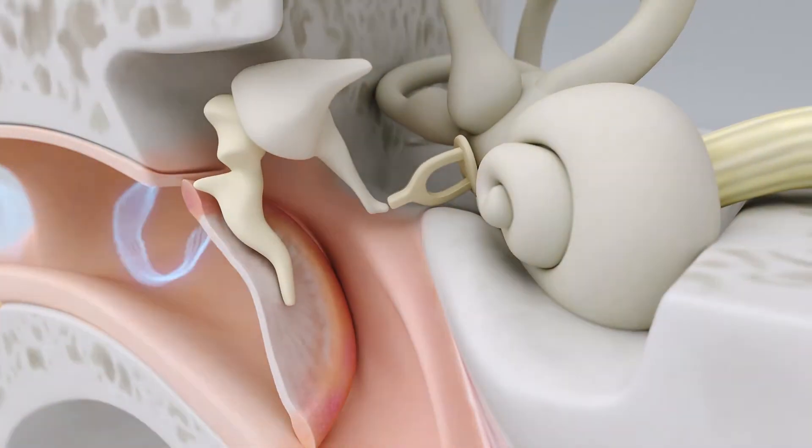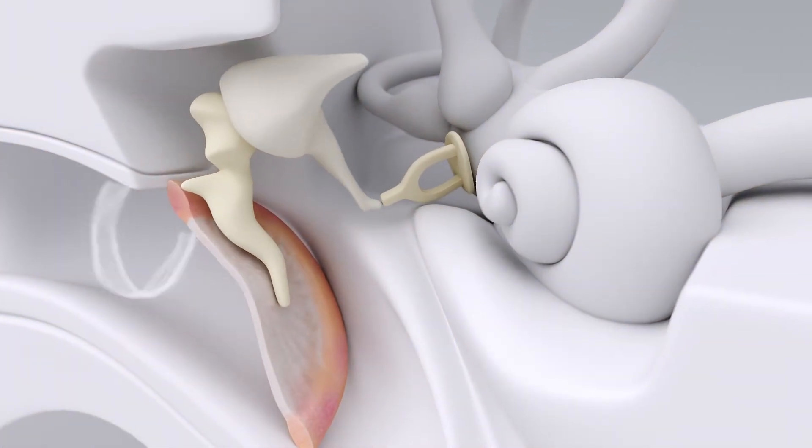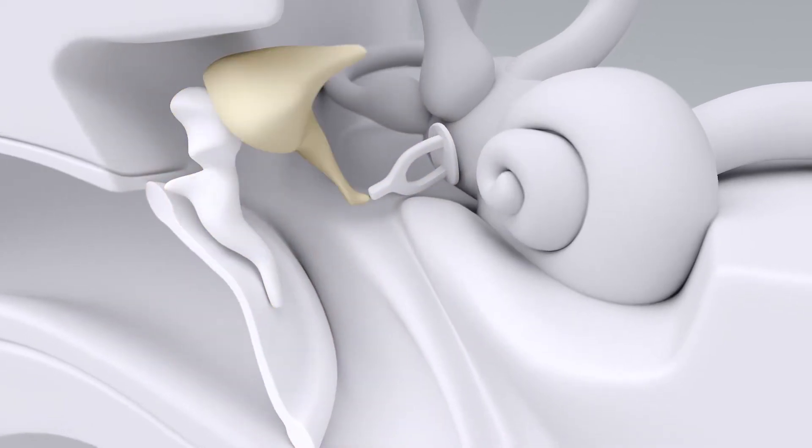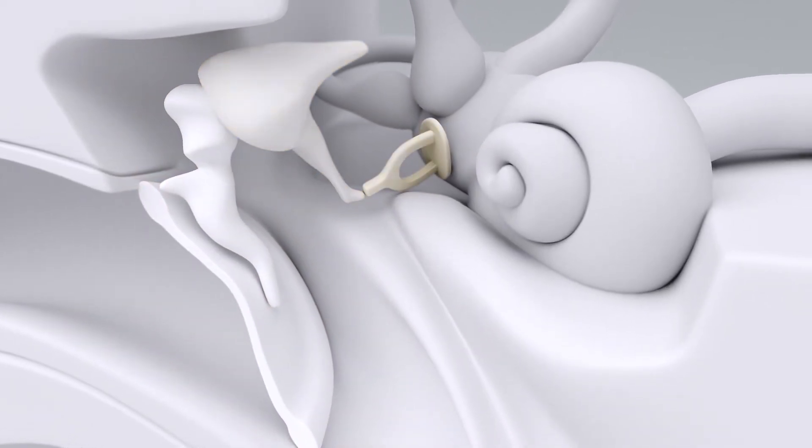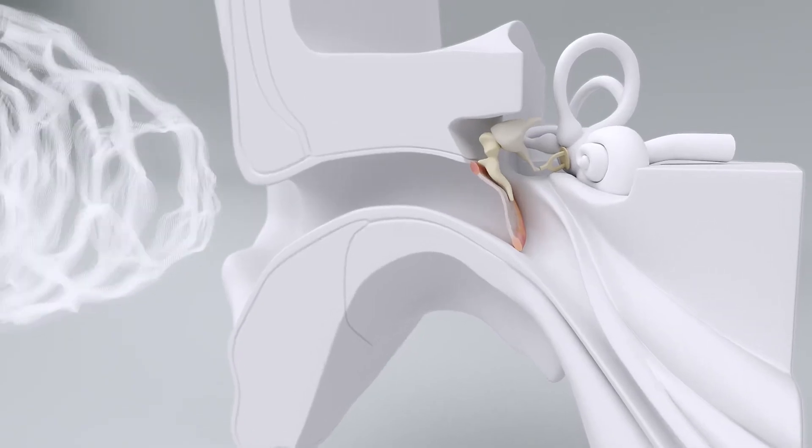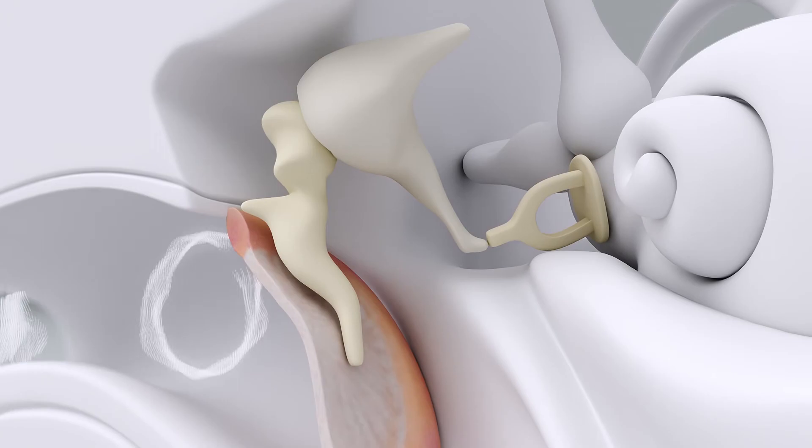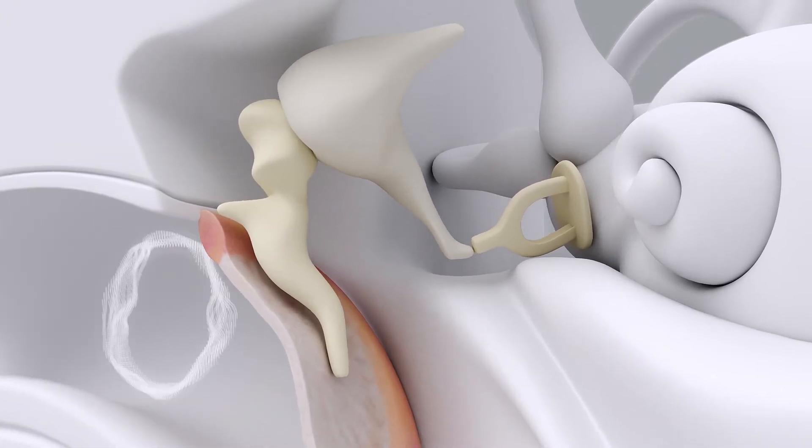In the middle ear are three tiny bones, referred to as the hammer, the anvil, and the stirrup. Collectively they are known as the ossicular chain.